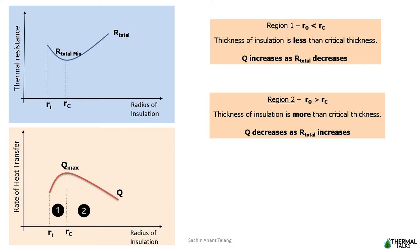Let us come to Region 2, where thickness of insulation is more than critical thickness — that is, if the value of Ro is greater than Rc. The further addition of insulation decreases the heat flow by increasing the total thermal resistance. Such a case is applicable in insulating steam pipes and refrigeration pipes, where the idea is to restrict the heat flowing out of the system.